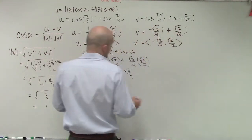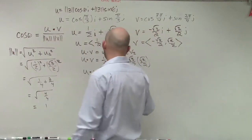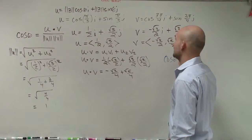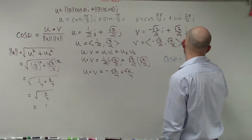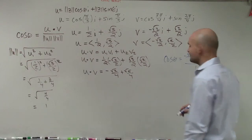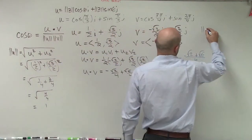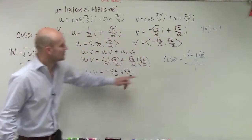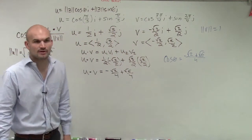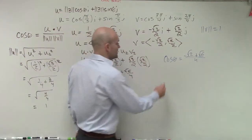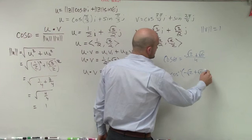So now, cosine of theta equals: the dot product result, which is −√2/4 plus √6/4, divided by 1 times 1, since both magnitudes are 1. We can combine this as (−√2 + √6)/4. They're asking for the angle, so theta equals the inverse cosine of (−√2 + √6)/4.